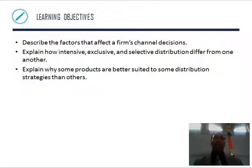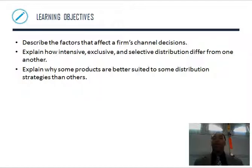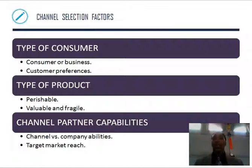More learning objectives: describe the factors that affect the firm's channel decisions — could be price, cost, or profit level, two different things. Explain how intensive, exclusive, and selective distribution differ from one another, and explain why some products are better suited to some distribution strategies than others. They pay a lot of experts to figure out what's the best way to market and sell this — that's the avenue you should go, or at least where the majority of your sales should go.